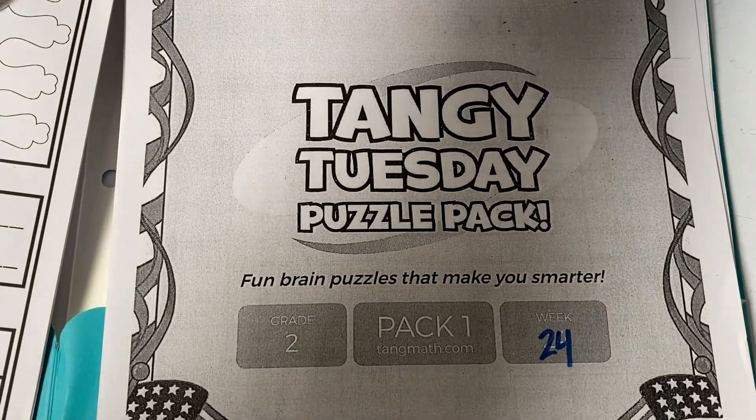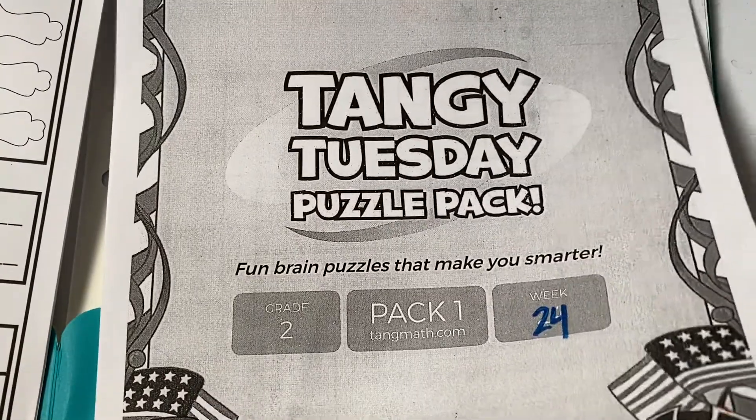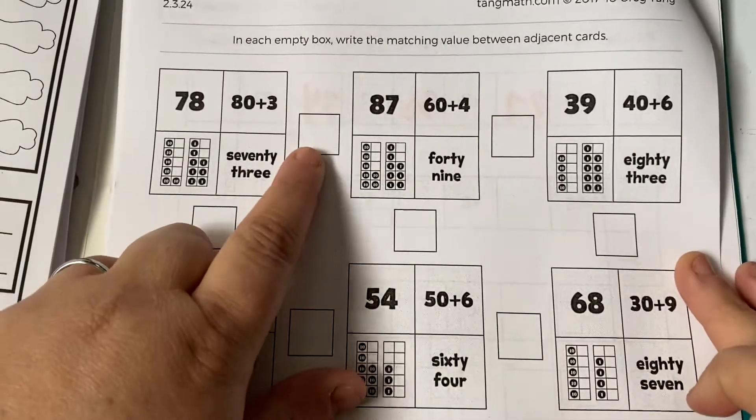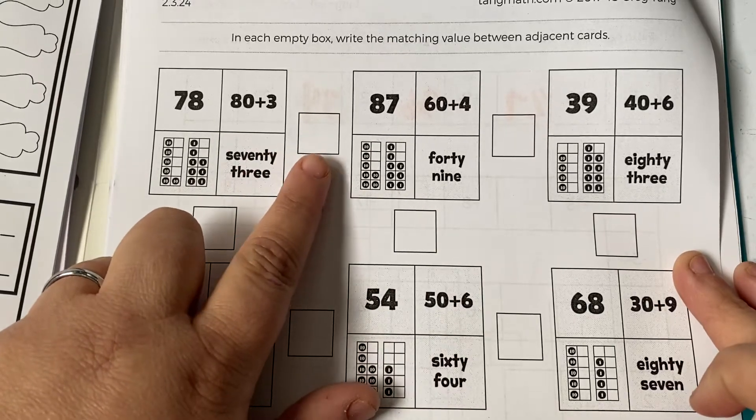Okay, we're in Tangy Tuesday packet number 24, and today is Wednesday, so we're doing Num Tanga. Just like the other weeks, you're finding the two numbers in the adjacent boxes.